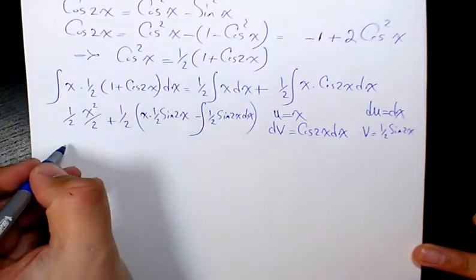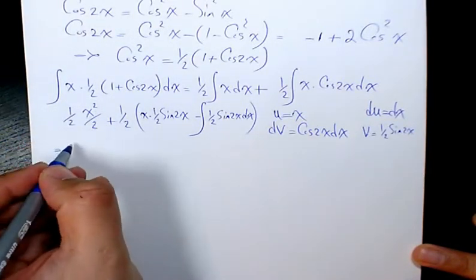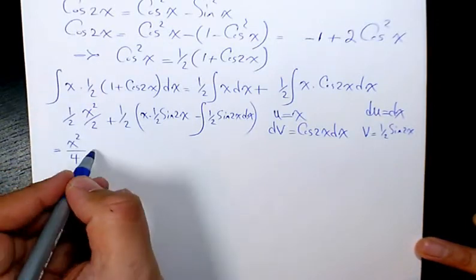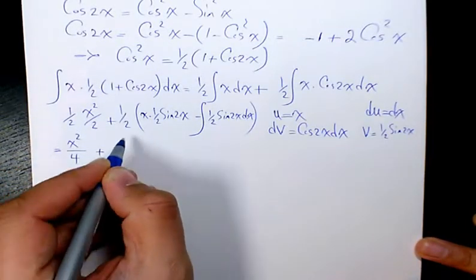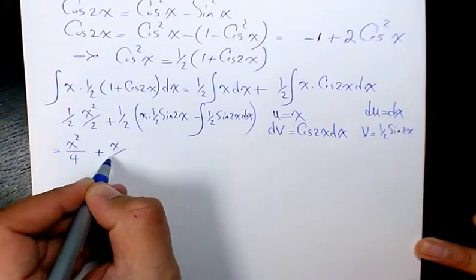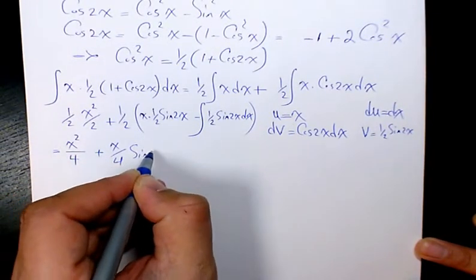And after that, I will simplify it. Here we have x squared divided by 4, since 2 times 2 is 4. And then these two together, it's going to be 1 over 4, so it's x over 4 sine 2x.